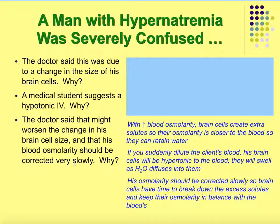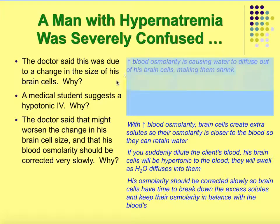A man with hypernatremia was severely confused. The doctor said this was due to a change in the size of his brain cells. Why would a lot of sodium in the blood change his brain cells? Because water follows solutes, and the solute it follows most is sodium. So with a lot of sodium in the blood, water will leave the brain cells into the blood. High blood osmolarity causes water to diffuse out of his brain cells, making them shrink and leading to confusion.